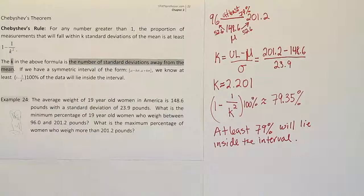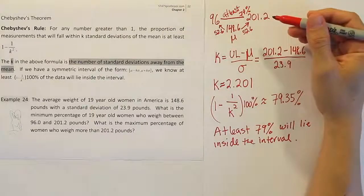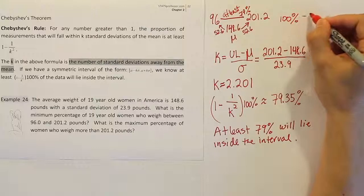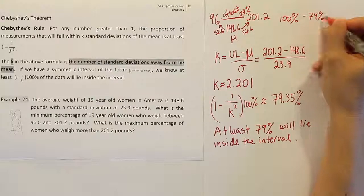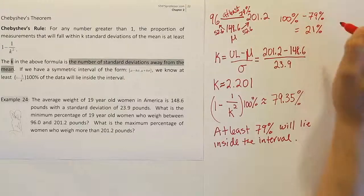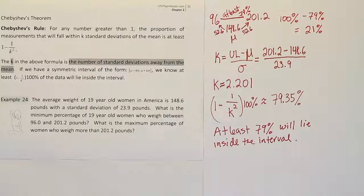So that brings us to the question, what could possibly be outside of the interval? If at least 79% is there, at most, what could be outside? And your answer is simply going to be to take this number from 100%. So if you do 100% minus 79%, of course you get 21%. And that number 21% that you find is going to give you the answer to our second part of the question.